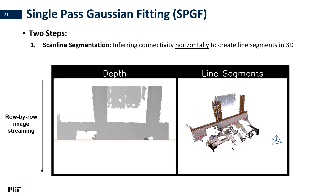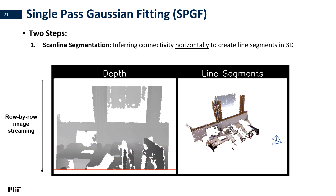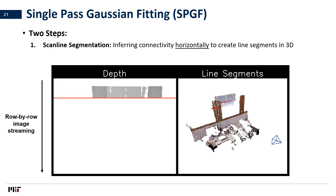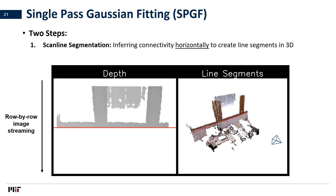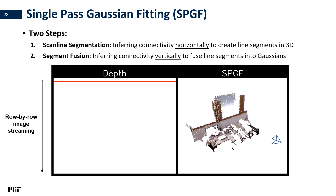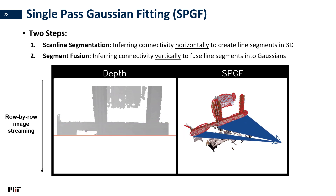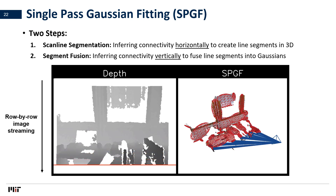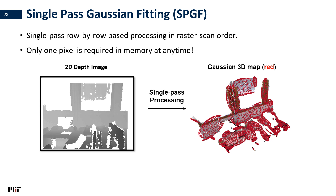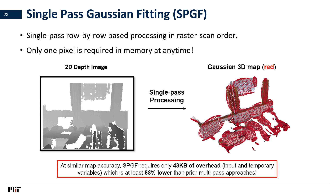During scanline segmentation, SPGF infers surface connectivity horizontally to create line segments that align on different surfaces in the 3D world, illustrated as red lines in the right figure. Note that lines on the same surface look very similar across neighboring rows. Then SPGF infers connectivity vertically by merging segments that are similar across rows. Because our algorithm processes the depth image one pixel at a time in a raster scan order, only one pixel is required in memory at any time, which leads to significant memory efficiency. SPGF achieves similar accuracy while requiring only 43 kilobytes of overhead for storing input and temporary variables, which is at least 88% lower than prior multipath approaches.